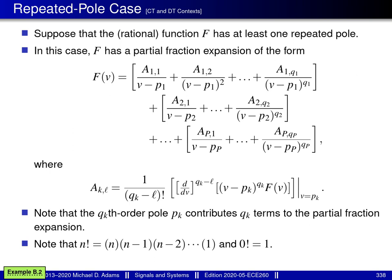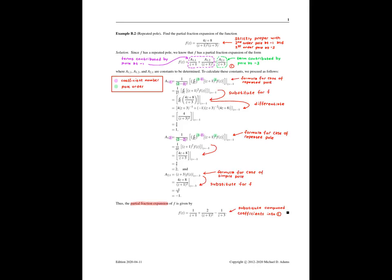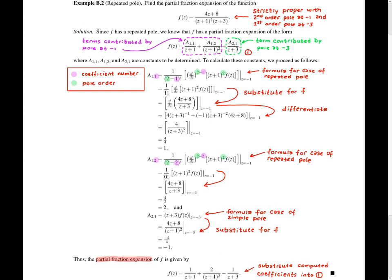I'd like to consider an example of computing a partial fraction expansion for the repeated pole case — in particular, example B.2. In this example, we're asked to find the partial fraction expansion of the function f, where f is given by this particular formula here. The denominator polynomial is fully factored into linear factors, so we can easily identify the poles and their orders. Due to the factor (z+1) squared, we have a pole at minus 1 of order 2, and due to the (z+3) factor, we have a pole at minus 3 of order 1.